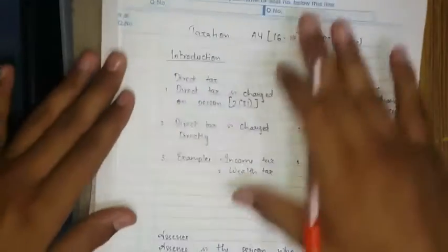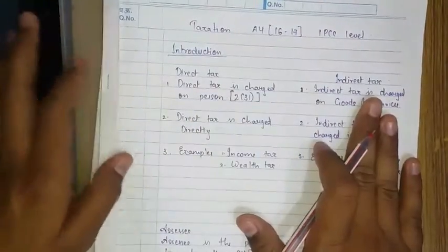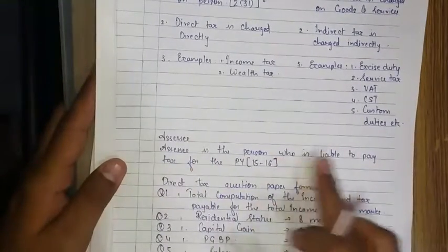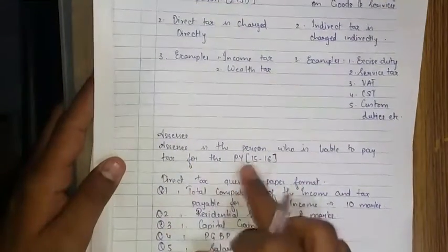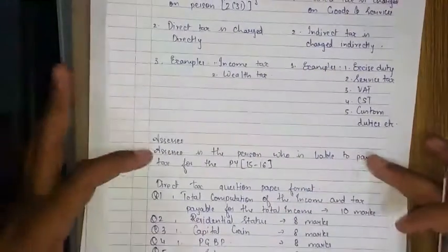So what we have learned today is what is direct tax, what is indirect tax, who is an SAC. SAC is a person who is liable to pay tax for the previous year 15-16, and we have discussed the paper format with the marks also.